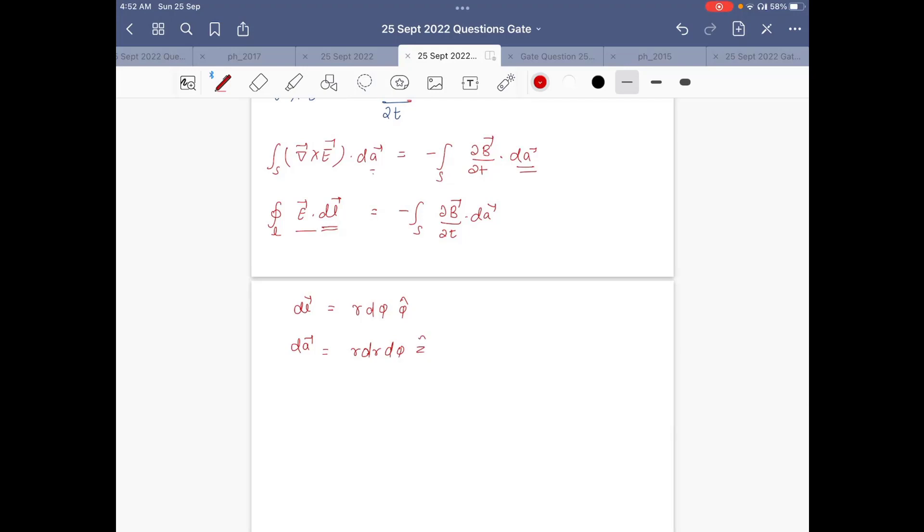So if we calculate E dot dl, it will become |E| r dφ where the E component here is the phi component. And we integrate φ from 0 to 2π.